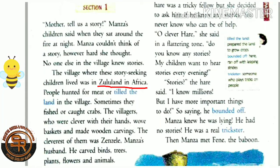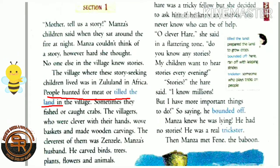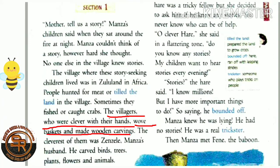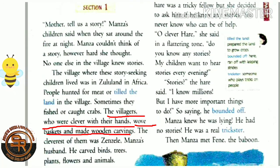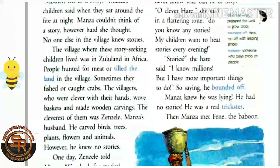People in the village hunted for meat or tilled the land to grow crops. Sometimes they fished or caught crabs. The villagers who were clever with their hands wove baskets and made wooden carvings. These were the professions of the people of Zulu Land.